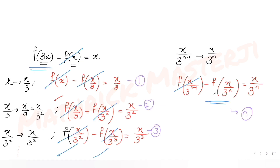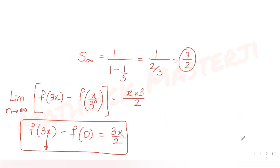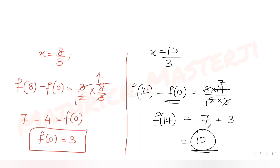I hope you understood how to solve this type of question dealing with limits and functions. We replaced x with x/3, x/3², x/3³, generating a geometric progression with infinite terms, applied the sum formula, obtained f(3x) - f(0) = 3x/2, then used x = 8/3 to find f(0) = 3, and finally x = 14/3 to get f(14) = 10.